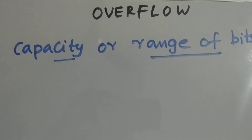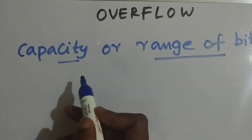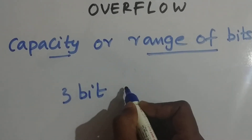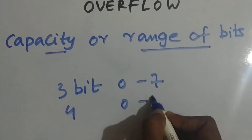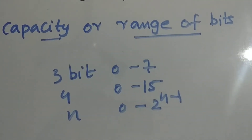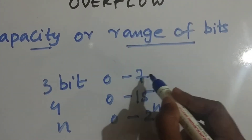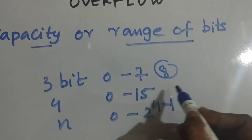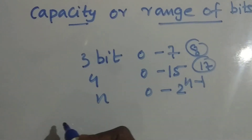Today's topic is overflow. Capacity or range of bits decides overflow. For unsigned bits, if we have 3 bits the range is 0 to 7; for 4 bits it's 0 to 15. For an n-bit unsigned number, the range is 0 to 2^n - 1. So if we want to represent 8 in 3 bits, that's an overflow. If we want to represent 17 in 4 bits, that's also an overflow.